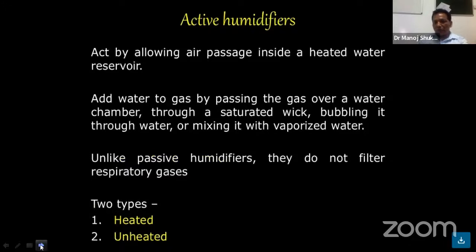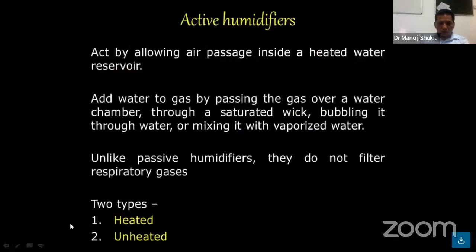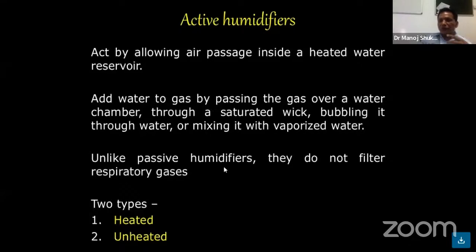The active humidifier works by allowing the airflow inside a heated water chamber, and adds water to gas by passing the gas over a water chamber, through a saturated wick, by bubbling it through the water, or by mixing it with vaporized water. Unlike passive humidifiers, they do not filter respiratory gas. Active humidifiers come in two kinds: heated and unheated.